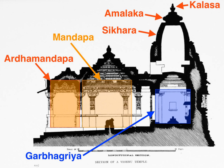Hindu temple architecture as the main form of Hindu architecture has many varieties of style, though the basic nature of the Hindu temple remains the same, with the essential feature an inner sanctum, the Garbhagriha or womb chamber, where the primary murti or the image of a deity is housed in a simple bare cell.